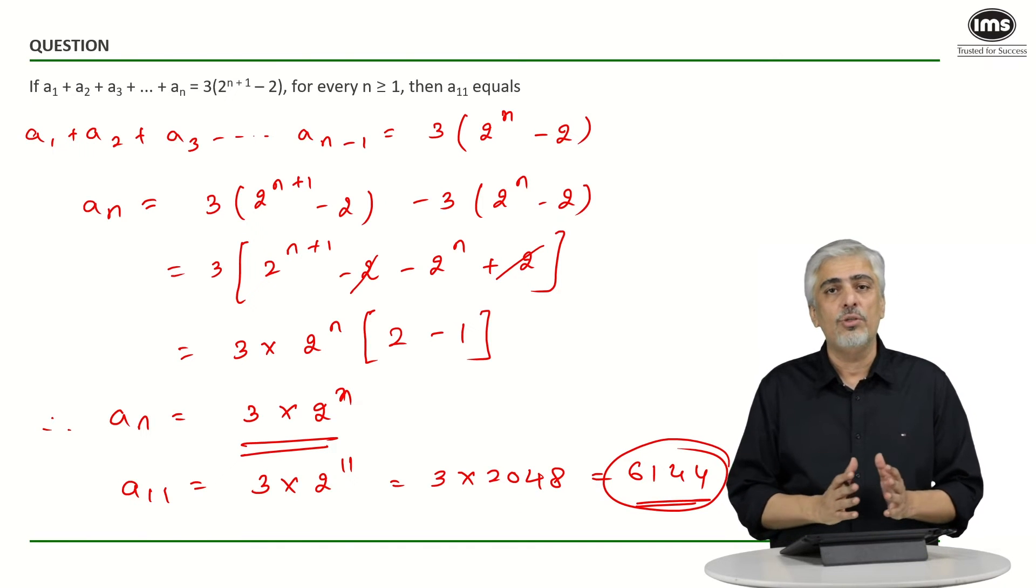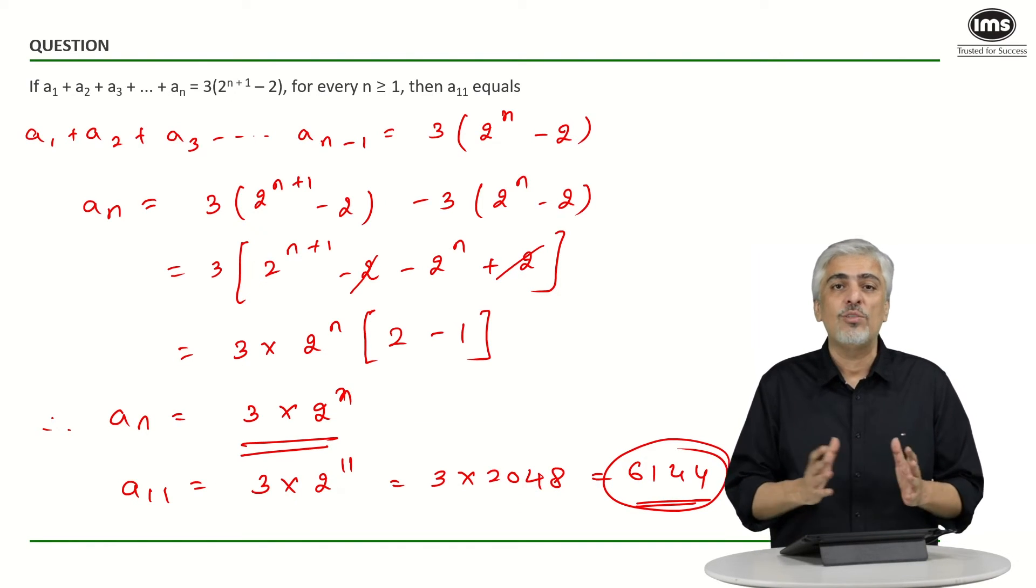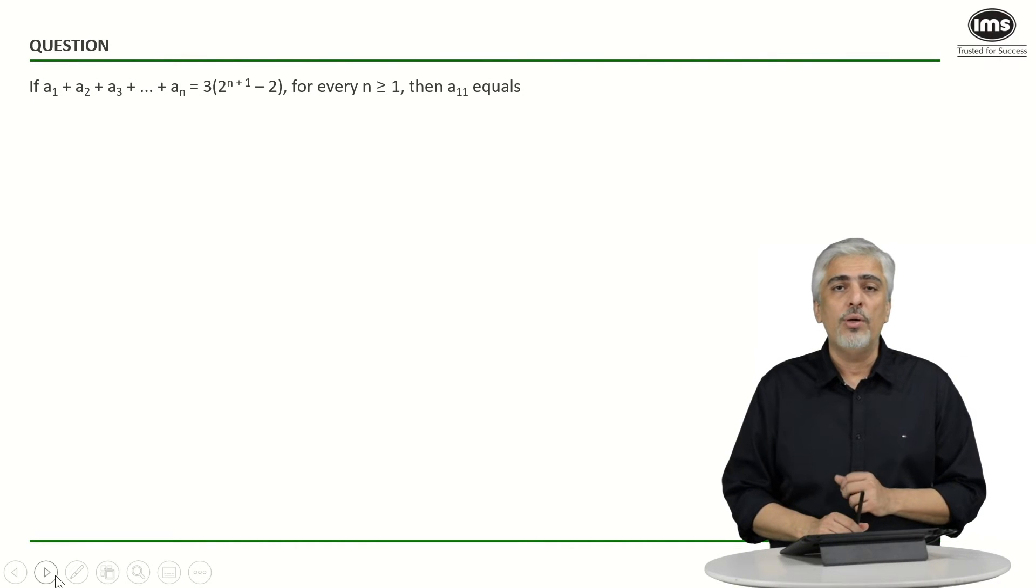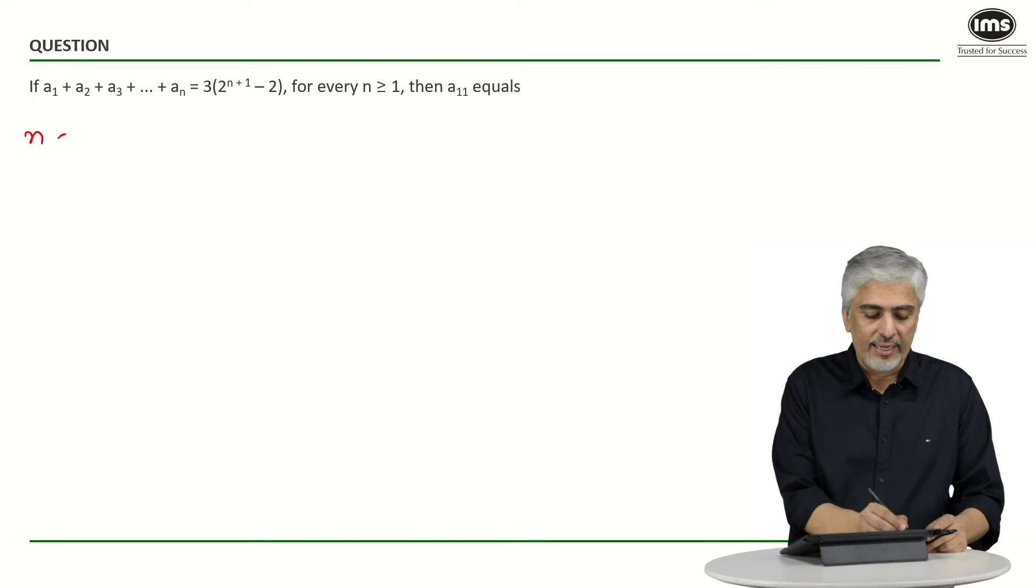Maybe this is not what I would have done on the day of the CAT. So this is the method, you know, which a purist of maths would want to do, but maybe not on the day of the CAT. So on the day of the CAT, I will look for one more approach for this question. Let's have a look at that method also. So by the next method, what I would do, I would start plugging in values for n. Let's start putting n as 1.